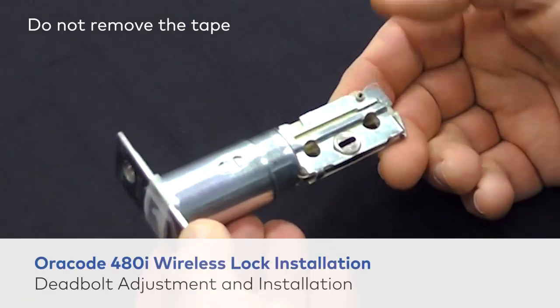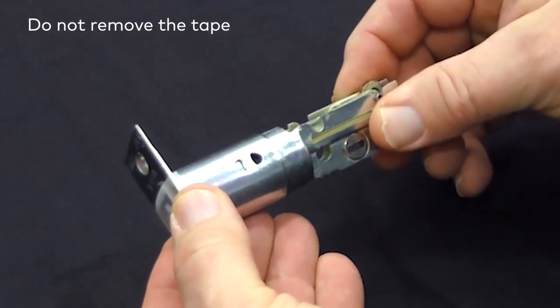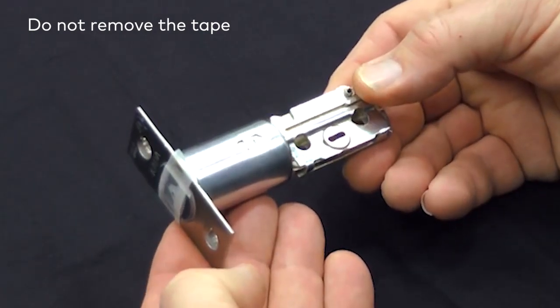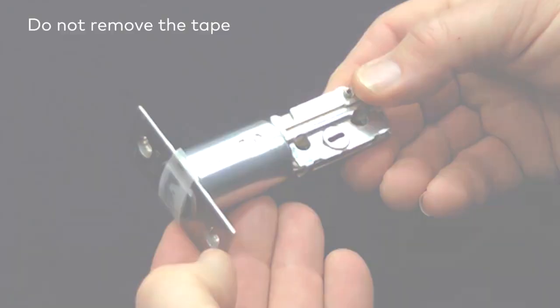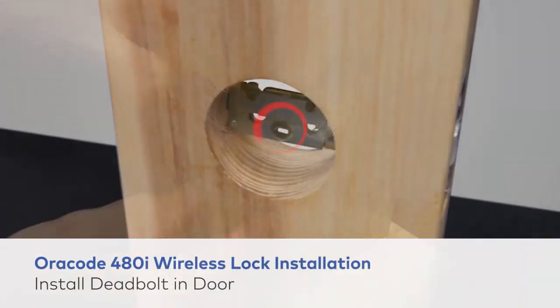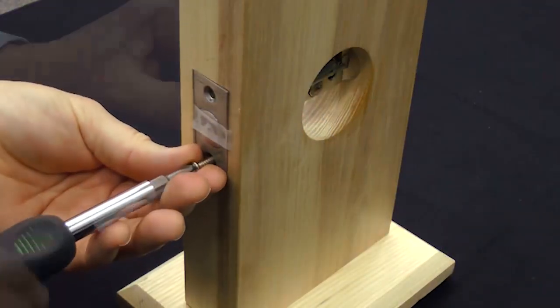The deadbolt is preset as 2 3/4 inch (70mm) backset. If required, adjust the deadbolt to 2 3/8 inch (60mm) backset. Install the deadbolt in the door with the two screws. Make sure the slot is at the bottom and the tape is still over the deadbolt.